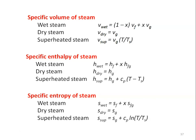Similarly, for specific entropy of steam: for wet steam S_wet = Sf + x·Sfg; for dry steam S_dry = Sg; and for superheated steam S_super = Sg + Cp·ln(T / Ts). Again, Sf, Sfg, and Sg values are taken from the steam table for the given pressure.